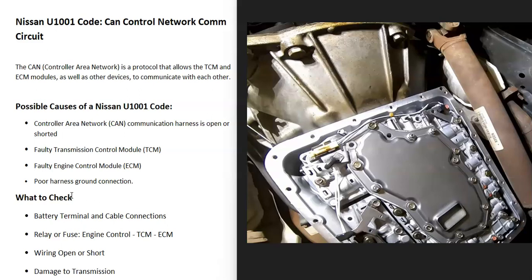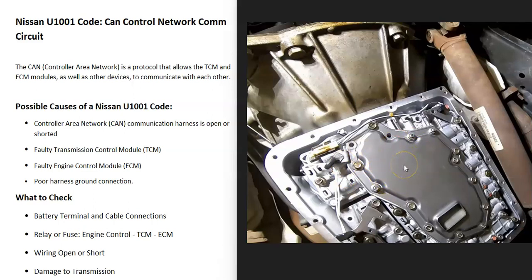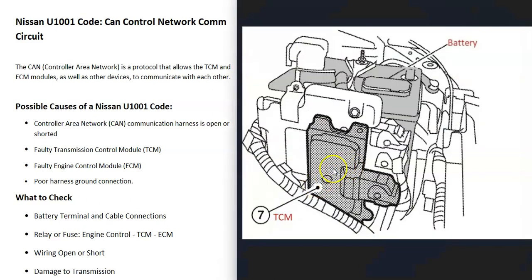Another thing to check: see if the transmission got damaged, or if anything came off the road and hit the bottom of it. On some Nissans they put the transmission control module up behind the valve body inside the transmission, and if anything came up from underneath and hit it, it can damage that module or cause issues.